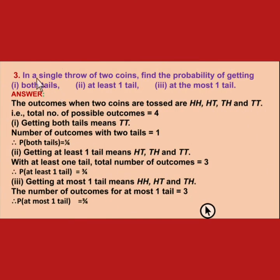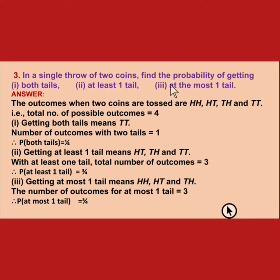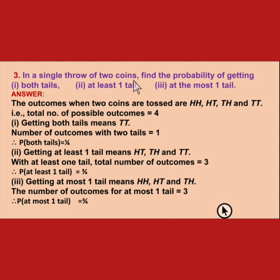Next is third. In a single toss of two coins, find the probability of getting: first, both tails; second, at least 1 tail; and third, at most 1 tail. Both tails means both coins show tail. At least 1 tail means 1 tail or more than 1 tail. At most 1 tail means 1 tail or less than 1 tail — that is, no tail.